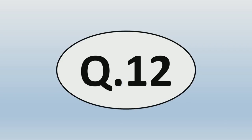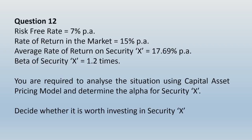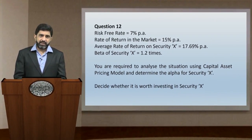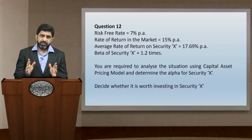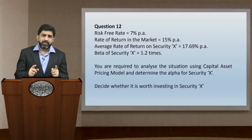Question number 12: Risk-free rate equals 7% per annum, rate of return in market is 15% per annum, average rate of return on security X is 17.69% per annum, and beta of security X is 1.2 times. You are required to analyze the situation using the Capital Asset Pricing Model, determine the alpha for security X, and decide whether it is worth investing in security X.